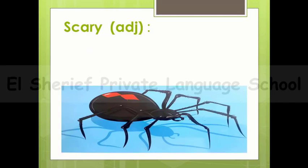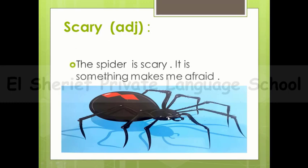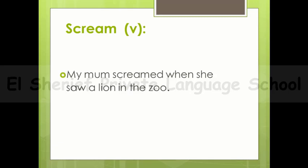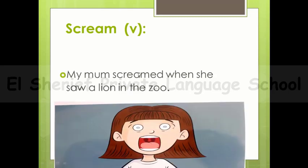The word scary. From the picture, you can see an insect. We can say the spider is scary — meaning it's something that makes you afraid. The word scream: from the picture you can see a girl opening her mouth — she's screaming. For example: my mom screamed when she saw a lion. That means she raised her voice because she was afraid and wanted someone to help her.